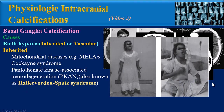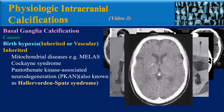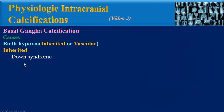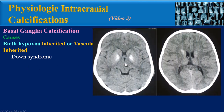The posterior fossa CT image shows bilateral slight calcifications in the dentate nuclei. Another inherited cause is pantothenate kinase-associated neurodegeneration, also known as Hallervorden-Spatz syndrome — a rare disorder characterized by progressive extrapyramidal dysfunction and dementia. This axial CT image shows mild cerebral atrophy with bilateral frontal subarachnoid space and ventricular dilatation, and bilateral symmetrical hyperdense punctate calcifications in the globus pallidi. Hallervorden-Spatz syndrome has a famous appearance on MRI named the 'tiger eye' appearance.